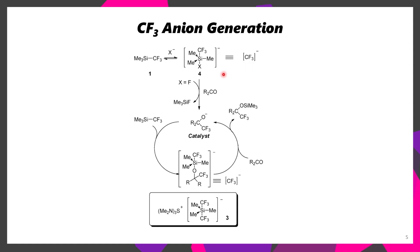Once you have this activated species, it's possible for it to attack the carbon of a carbonyl, affording an alkoxide. This alkoxide, however, is a good activator and is able to react with trifluoromethyltrimethylsilane, affording the TMS ether product, while only requiring the fluoride as an initiator, since the alkoxide product eventually acts as an activator, driving the whole reaction forward.